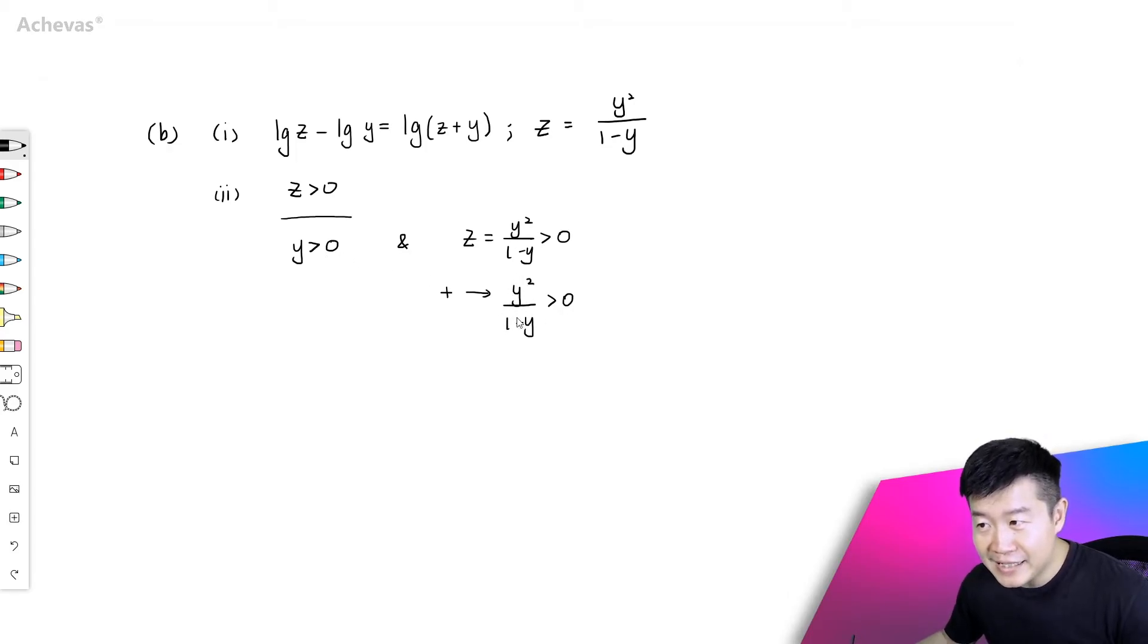And if this entire expression here is bigger than 0, this tells me that the denominator here must also be positive. First of all the denominator cannot be equal to 0, or else the expression is going to be undefined, and it cannot be negative, or else positive divided by negative will not give you something that is bigger than 0.